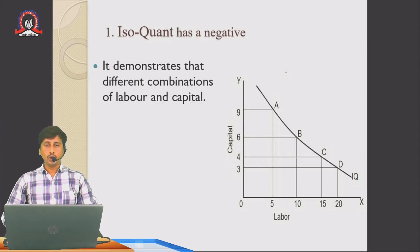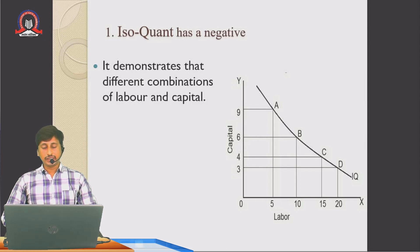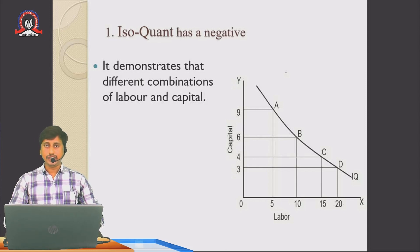The isoquant has a negative slope because we are applying the law of diminishing marginal returns to scale. When one factor rises, another falls — when the labor factor rises, capital reduces — and that is why we obtain a downward sloping isoquant curve from left to right.